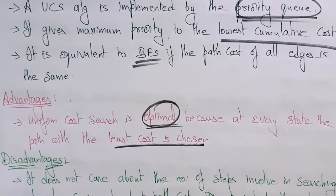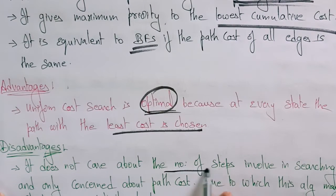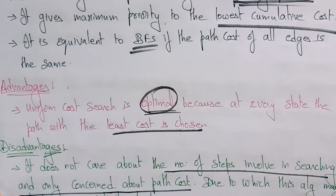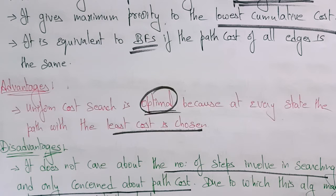The disadvantage is that it does not care about the number of steps involved in searching — it is only concerned about path cost. For example, if you want to purchase an item and there are many shops, you go to each and every shop asking the cost of that item, searching many shops to find the best rate, and then purchasing from that particular shop.